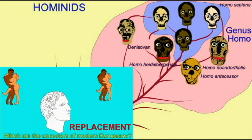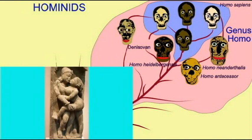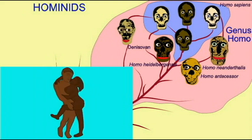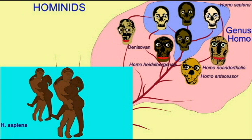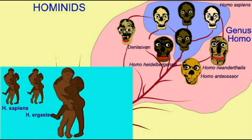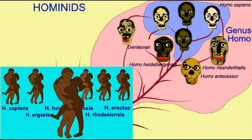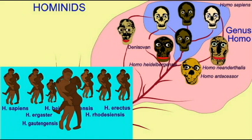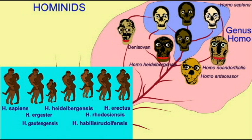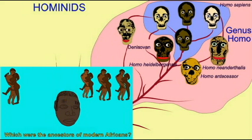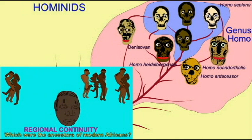A second alternative, that of regional continuity, is that when Homo sapiens arrived in these other continents, populations interbred with the hominids already living there, and so modern groups of humans native to Africa, to Europe, and to Asia would not only have their ancestry determined by the Homo sapiens which originated in Africa 200,000 years ago, but also in some of these earlier groups of hominids which had spread throughout the globe.